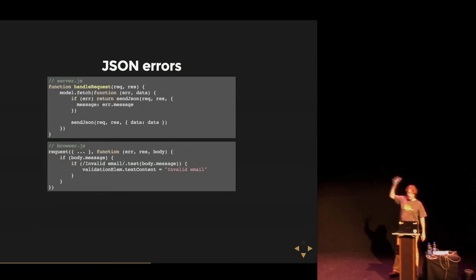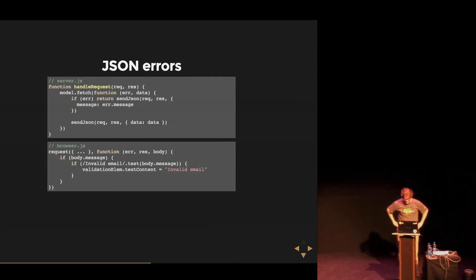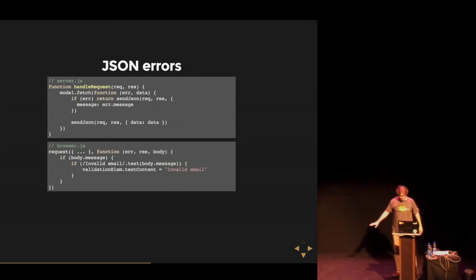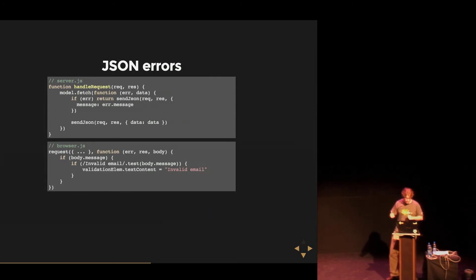Does anybody have any idea what's wrong with treating errors as strings? One of the problems is that errors are not strings, and it's quite important. Even in your Node code, if you're building any kind of async API where anything has a callback on it, you have to make sure that the error can't be a string, can't be true, can't be a numeric error code — it should be an error object with a stack on it. That's quite important for domains and for actually being able to introspect your errors.